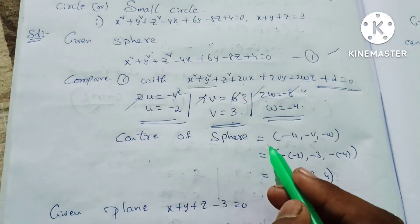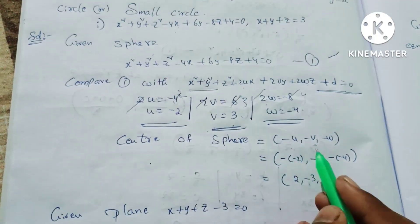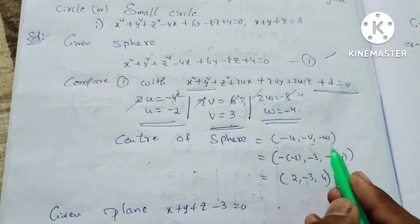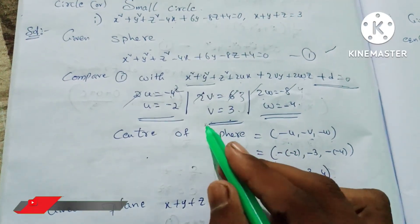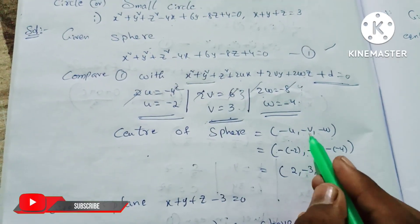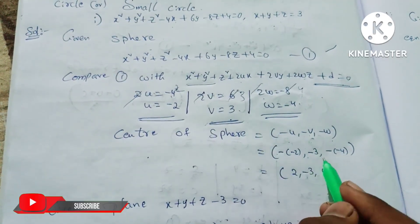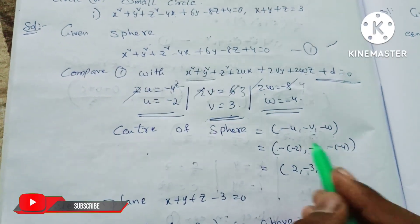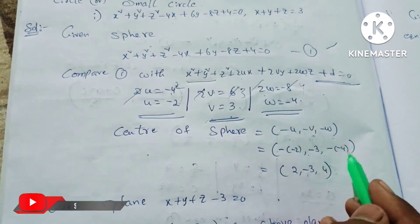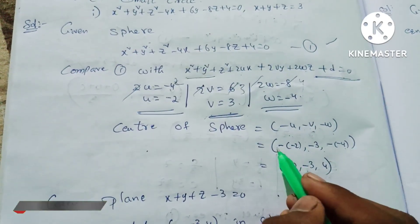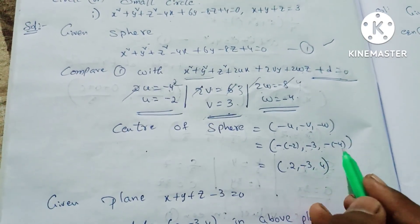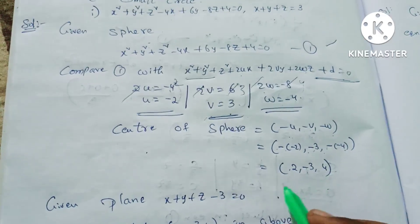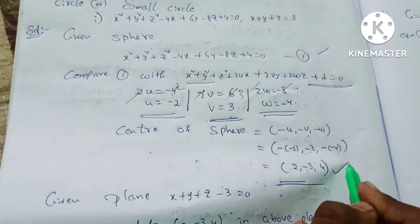The center of the sphere is given by the formula (-u, -v, -w). So: -u = 2, -v = -3, -w = 4. Therefore, the center is (2, -3, 4).